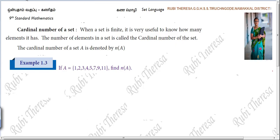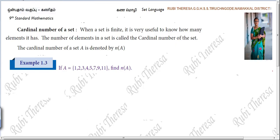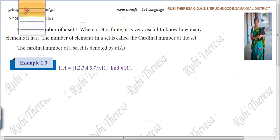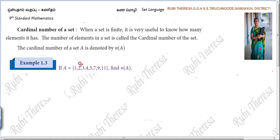Apu, Kanna, Governing. Example 1.3: If A equals {1, 2, 3, 4, 5, 7, 9, 11},